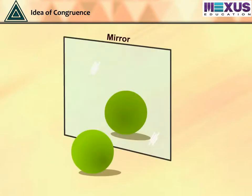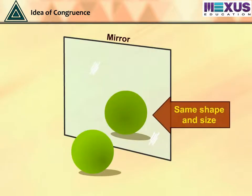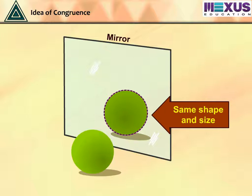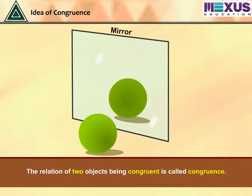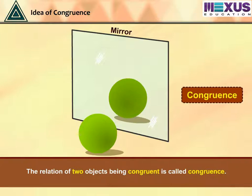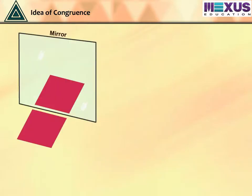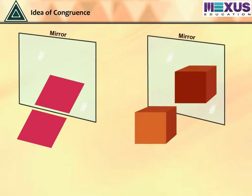In geometry, two figures or objects are congruent if they have the same shape and size, or if one has the same shape and size as the mirror image of the other. The relation of two objects being congruent is called congruence. The idea of congruence is applicable to both two-dimensional and three-dimensional shapes.